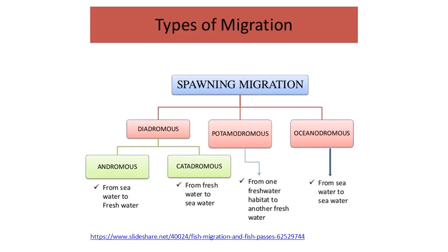We have spawning migration types under diadromous migration: anadromous, from seawater to freshwater — the fish spawns in a river; catadromous, from freshwater to seawater — the fish releases eggs in seawater; potamodromous, from one freshwater habitat to another; and oceanodromous, from one seawater area to another.